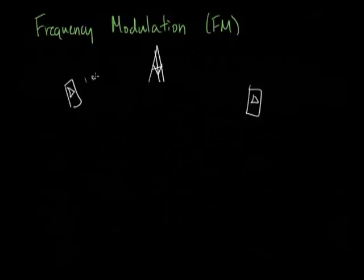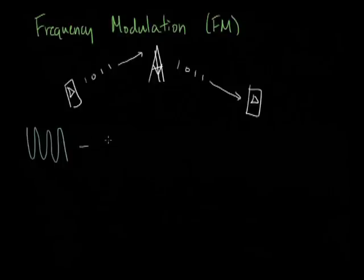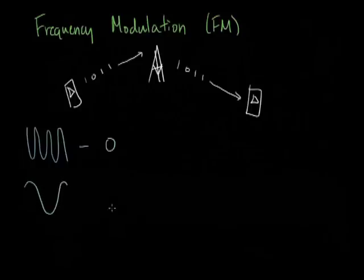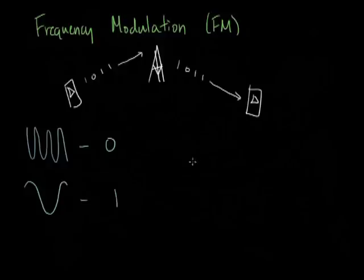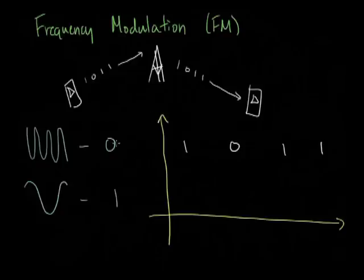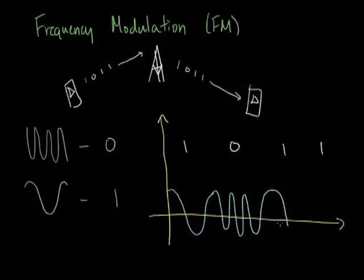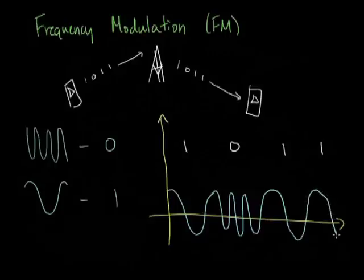Cell phones send digital information—ones and zeros—to each other or to wireless towers. Hardware translates these into text or sounds. We agree that one frequency means zero, and another frequency means one. To send the message 1-0-1-1, I send a signal where I change the frequency accordingly: high frequency for one, low frequency for zero, and so on.